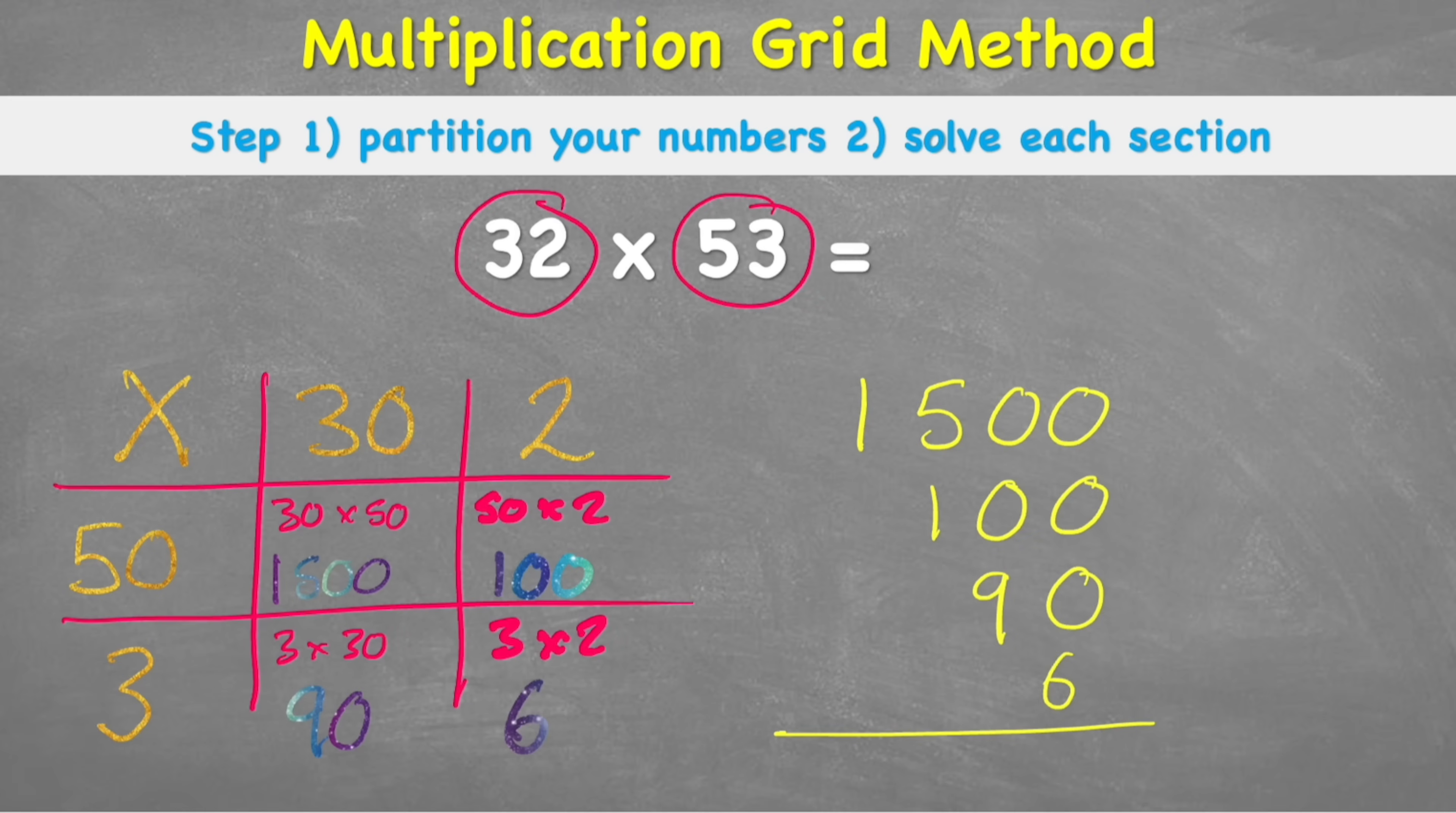So in my ones column, I have 0, 0, 0, and 6, which leaves me with 6. In my tens, I have 0, 0, and 9, which gives me a 9. In my hundreds, I have 5, and a 1, which is 6. And in my thousands, I have just a 1. So therefore, my final answer is 1,696.